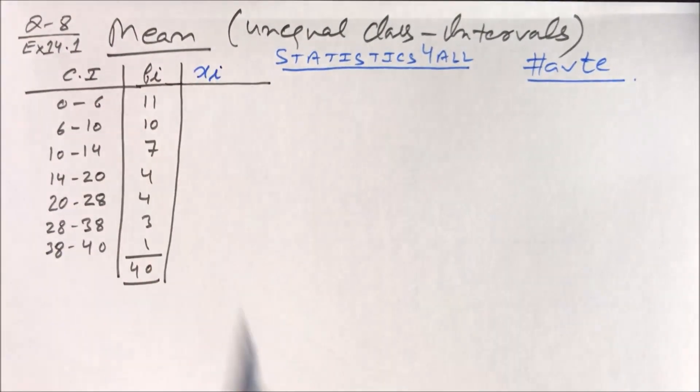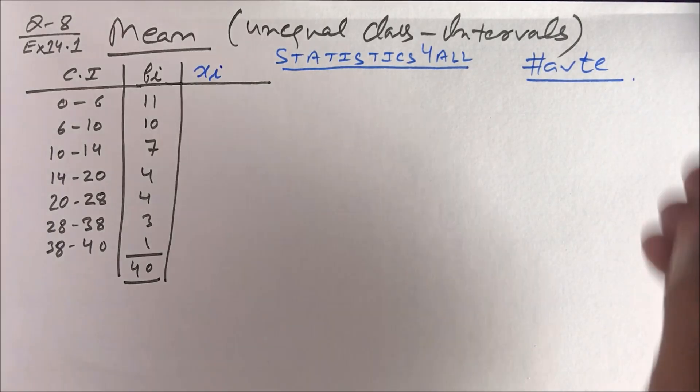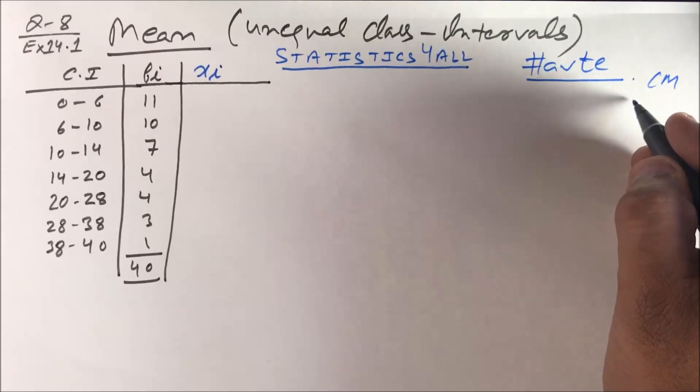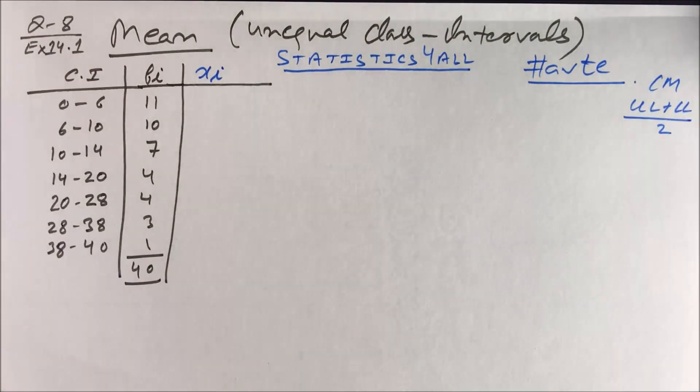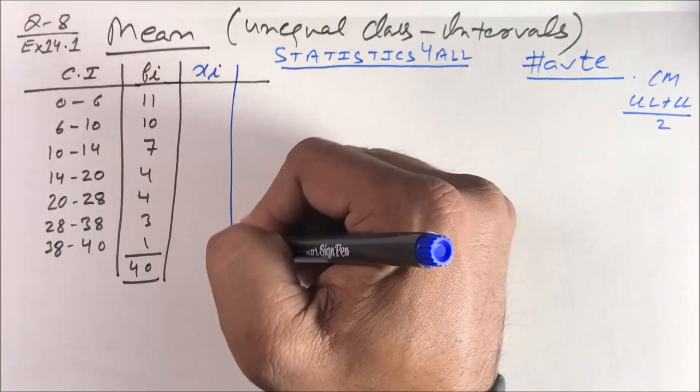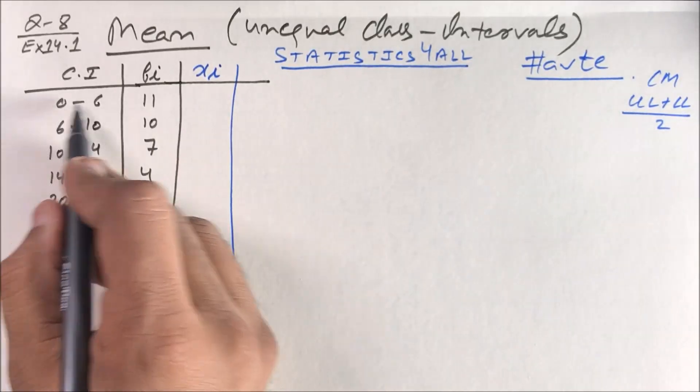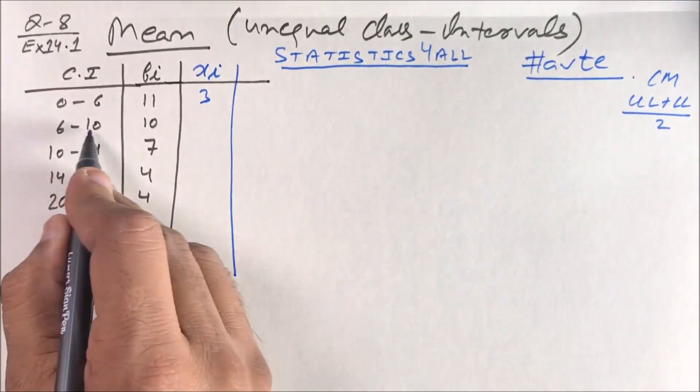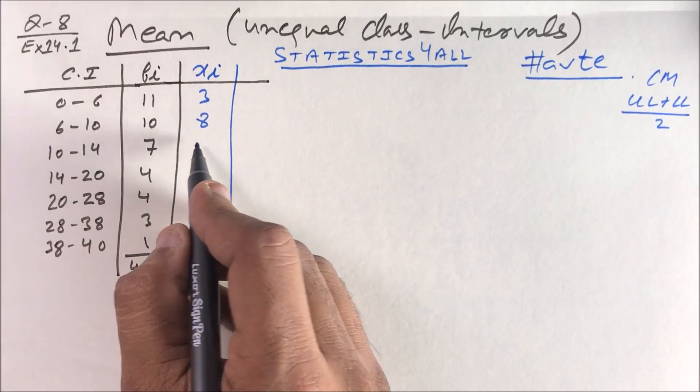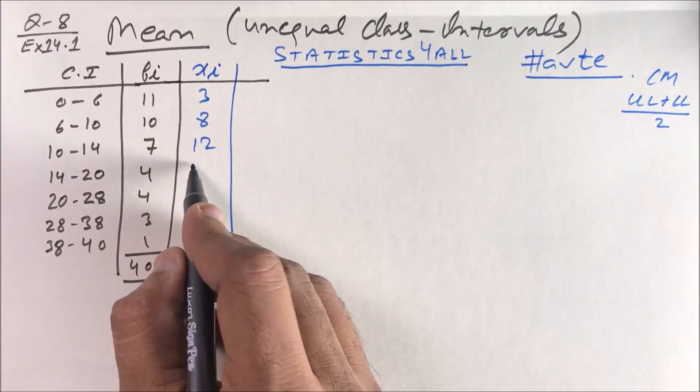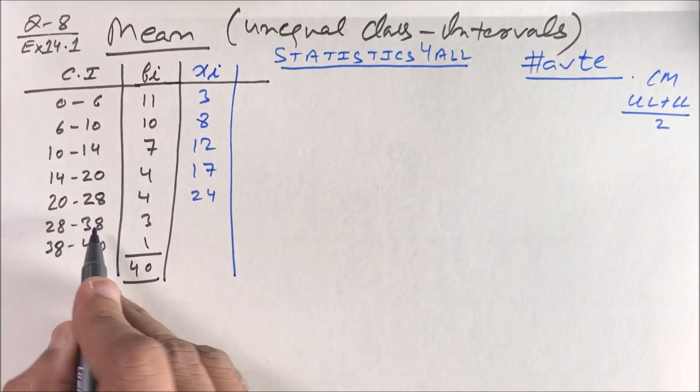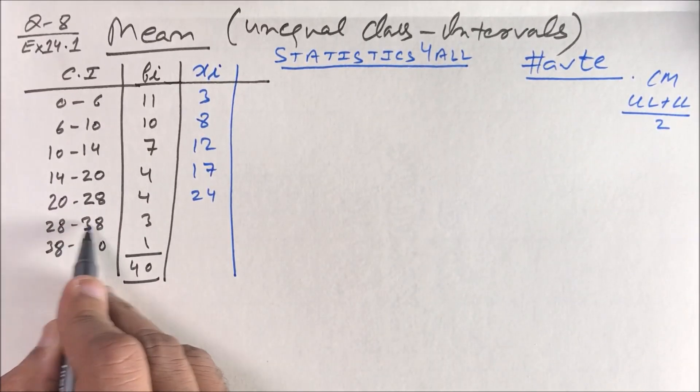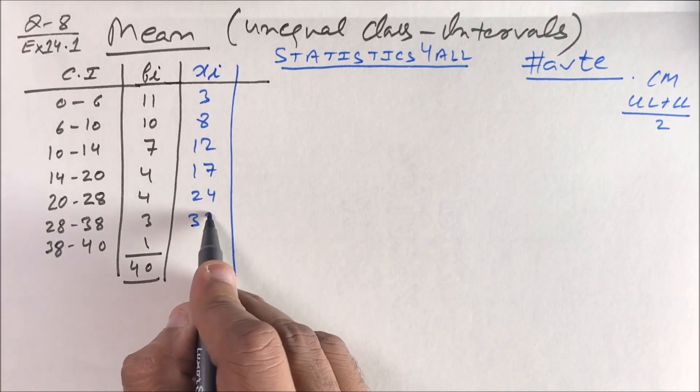First of all, we will calculate x_i, the class mark. Class mark means upper limit plus lower limit divided by 2. So 0 plus 6 upon 2 is 3, then 8, 12, 17, 24, 33, and 39. This is your x_i.